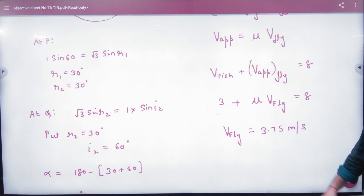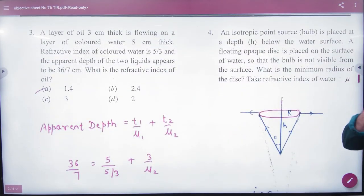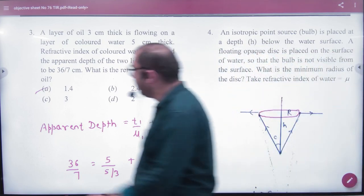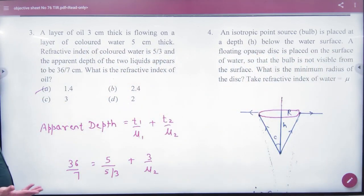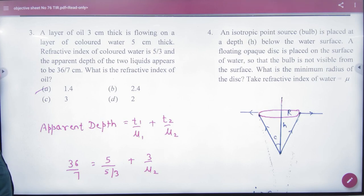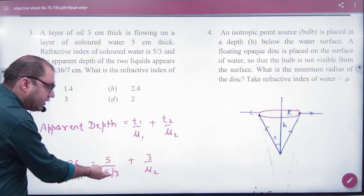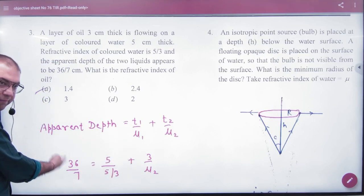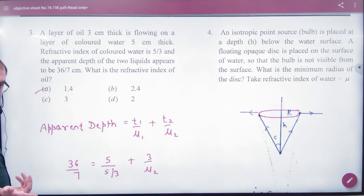This is the hint. After this question, question number 3. A layer of oil 3 cm thick and colored water 5 cm thick. Refractive index of colored water is given, and apparent depth of the two liquids appears to be 36 by 7. Find the oil's refractive index. Two mediums, normal shift, one and the other. So real depth and apparent depth, this is the topic. One's depth, one's refractive index, and the other's refractive index, and the total distance that is looking at 36 by 7.